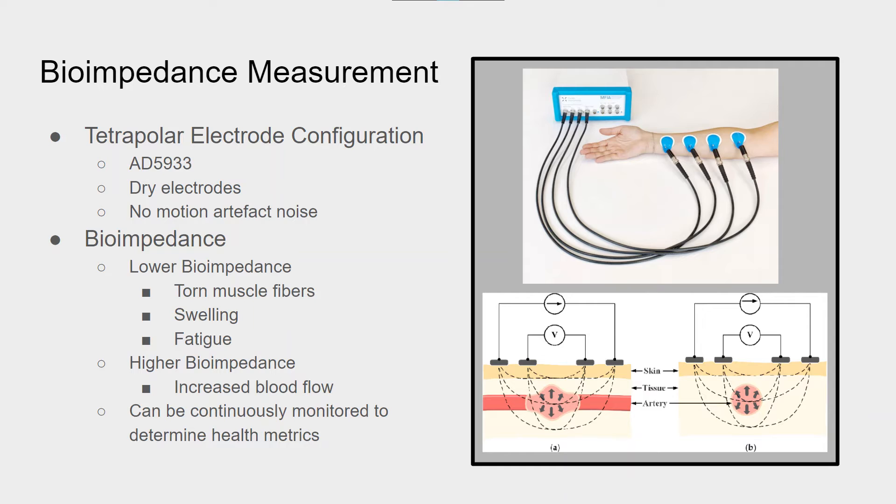The tetrapolar configuration, you can see in the very top picture, is where there are two pairs of electrodes, the outside pair and inside pair. The outside pair applies power to the tissue while the inside pair measures the voltage drop across the tissue. This allows for a constant voltage source to be used for the outside pair rather than a constant current source, which can generally be harder to maintain.